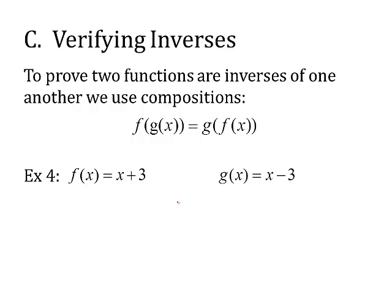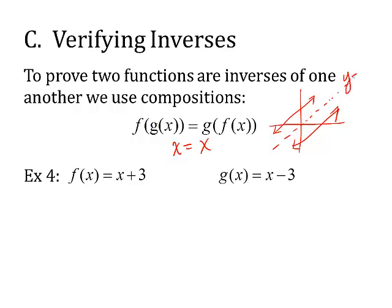Now we need to verify inverses. To prove two functions are inverses of one another, we use compositions — f(g(x)) and g(f(x)). When you do that, you should end up with x. The reason is that inverses are a reflection along the line of symmetry y = x, which is why both compositions have to equal x.